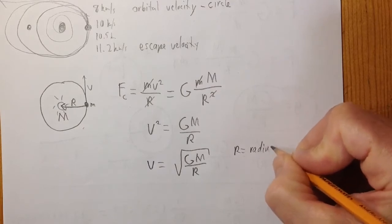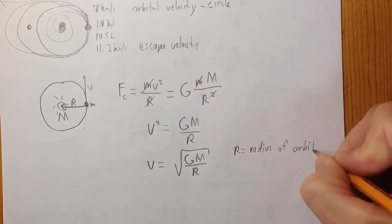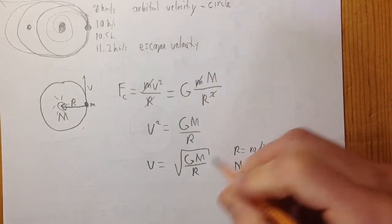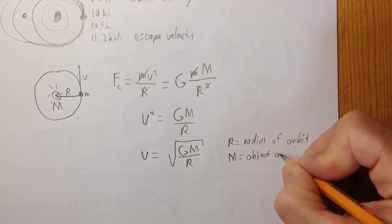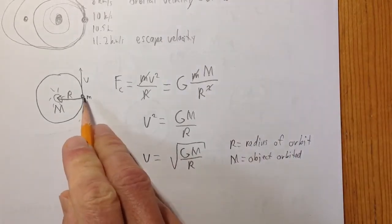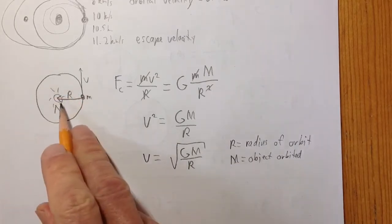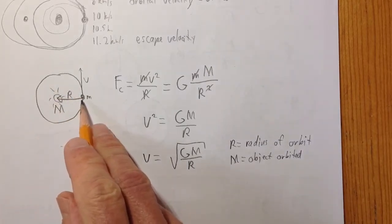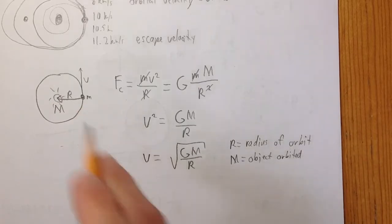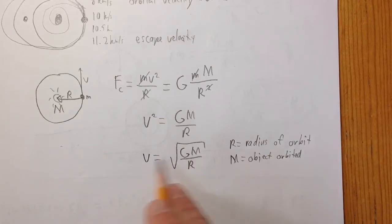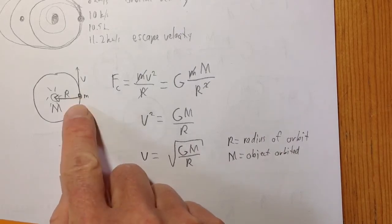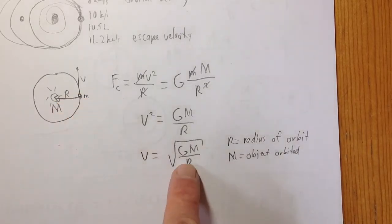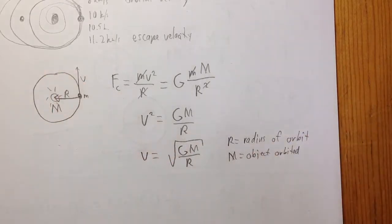R is the center-to-center distance of whatever it is you're orbiting, so it's the radius of the orbit. The mass M is the object being orbited — big M is not the mass of the thing going in a circle, it's the object that's being orbited. It turns out it doesn't matter how heavy the object is orbiting — it's going to go at the same speed. In other words, if you want something to orbit at the same place the Earth is, it doesn't matter what its mass is. All you've got to do is get it going this fast, which is about 8 kilometers per second, and it will orbit.